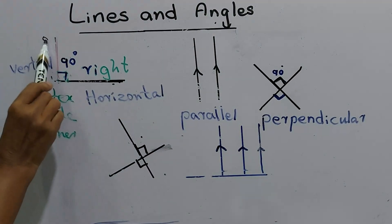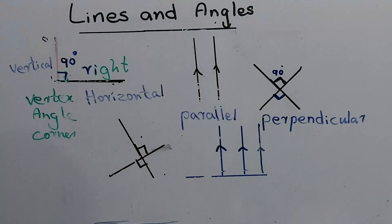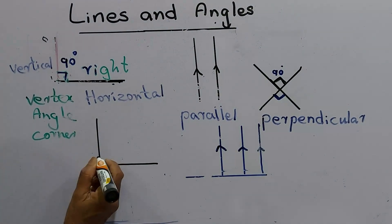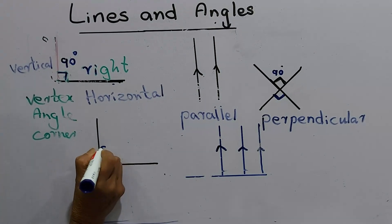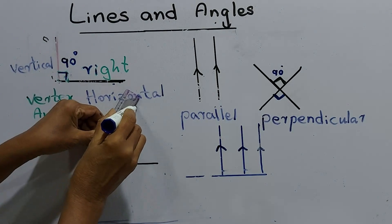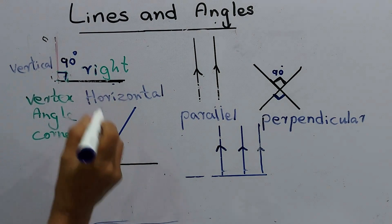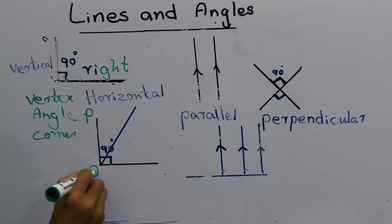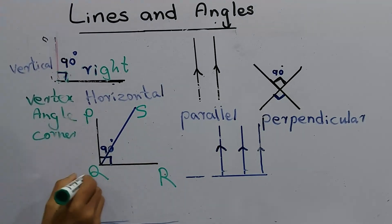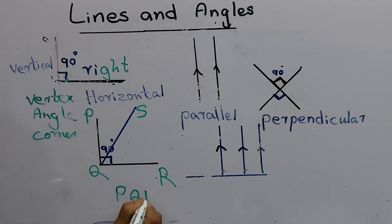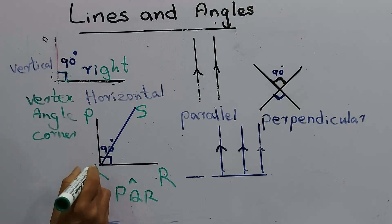Now you already know horizontal lines, vertical lines, parallel lines, and perpendicular lines. Let's draw a horizontal line and a vertical line. We know this angle is 90 degrees. Starting from the vertex, I draw another line. We name this angle as PQR. The PQR angle is 90 degrees.